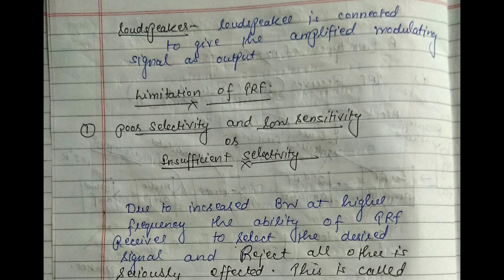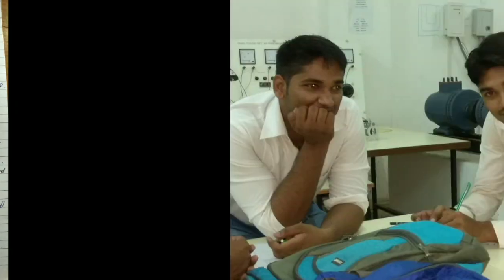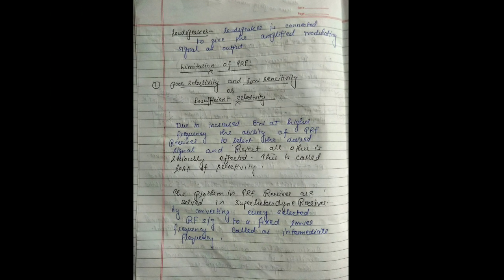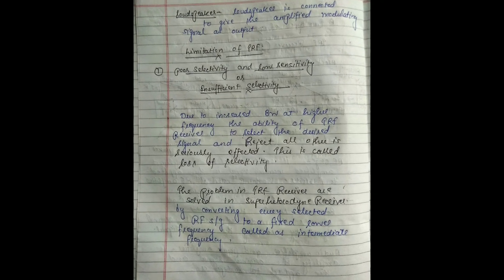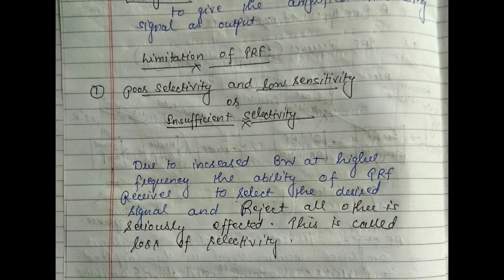The second limitation of the TRF receiver is variable variation in bandwidth. TRF receivers suffer from a variation in bandwidth over the tuning range. This variation in bandwidth also causes issues with selectivity and sensitivity. This is the second limitation: variable bandwidth.